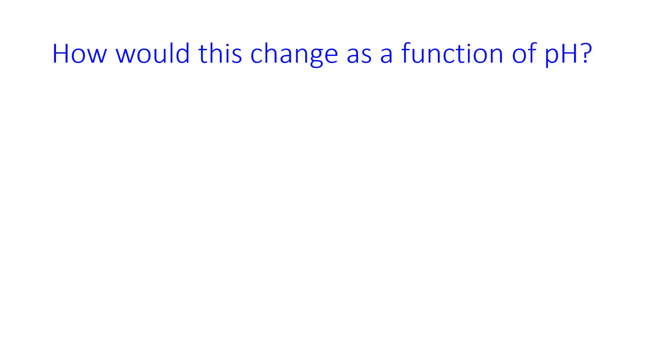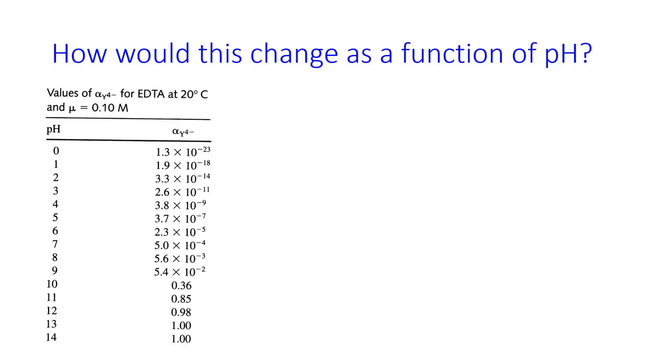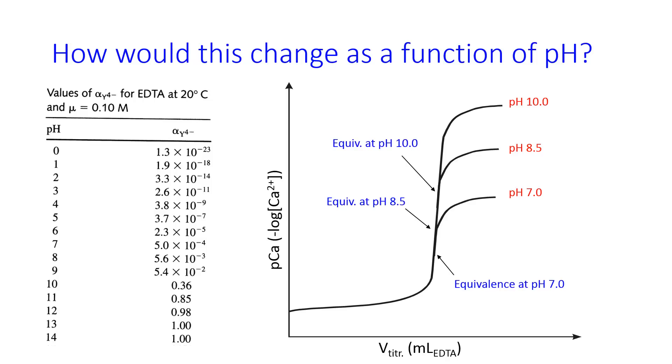This can change though, as a function of pH. And the reason that the shape of the curve can change as a function of pH is because alpha-Y4- changes as a function of pH, and therefore, the amount of EDTA that's available to complex with, for example, calcium changes, for the same amount of EDTA as a function of pH.